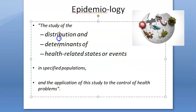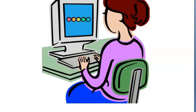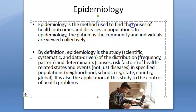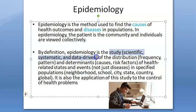Distribution and determinants — don't forget these two D's. In the exam, you can also write causes of diseases. You can also say it is a scientific, systematic, and data-driven study of the distribution and determinants.